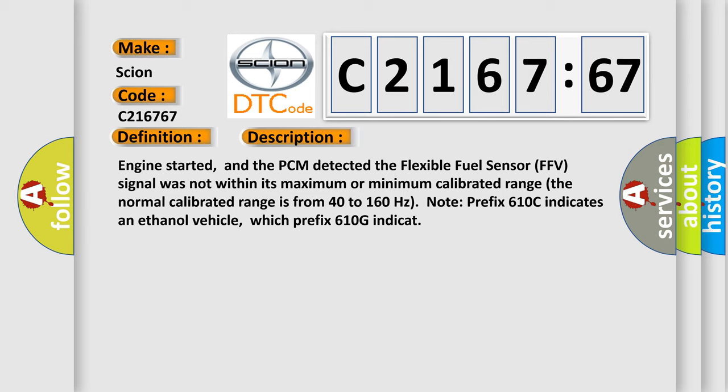And now this is a short description of this DTC code. Engine started, and the PCM detected the flexible fuel sensor (FFV) signal was not within its maximum or minimum calibrated range. The normal calibrated range is from 40 to 160 Hz.